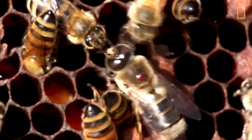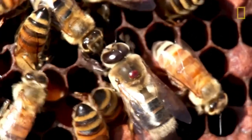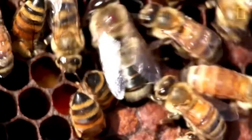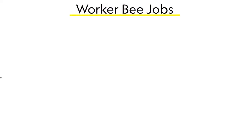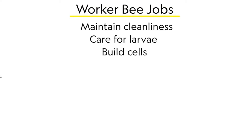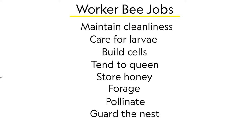The worker honey bees are sterile females that perform the great majority of the work for the colony. They maintain the cleanliness of the cell, build cells, tend to the queen, care for the larvae, store honey, forage, pollinate, guard the nest, and even feed the drones.